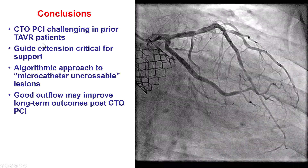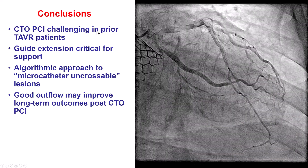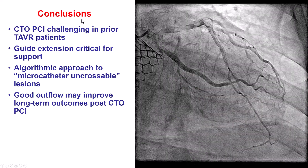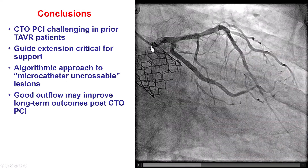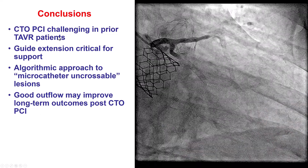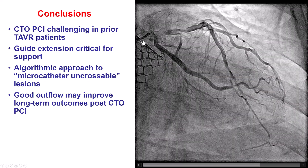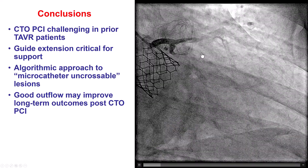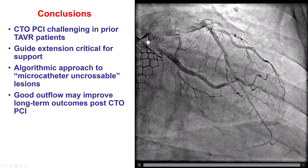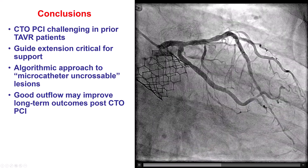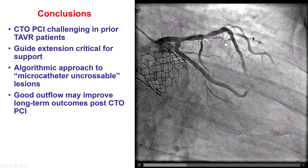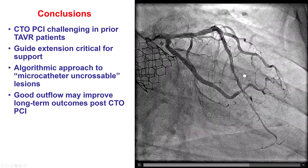In summary, we had a patient with previous TAVR, which creates challenges for PCI. Specifically, the main challenge has to do with engagement of the coronary vessels. In this case, we were able to engage using a Trapliner guide extension. However, we had poor support, which made it difficult to advance equipment. To resolve this, we had to advance the Trapliner all the way to the mid-LAD, which enabled crossing of the CTO with balloon dilation and exchange of the guide wire.